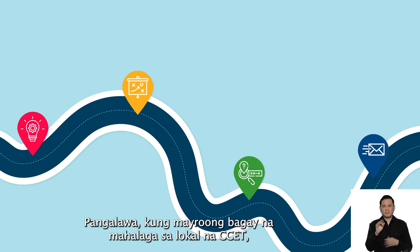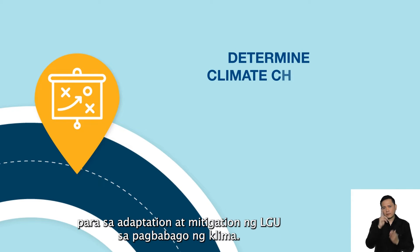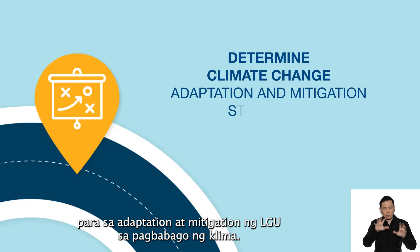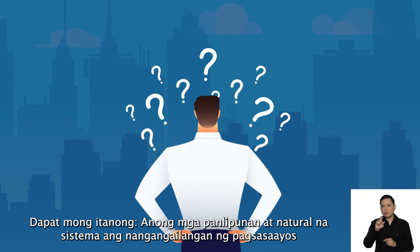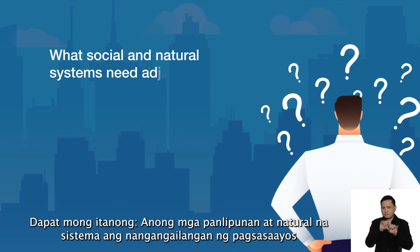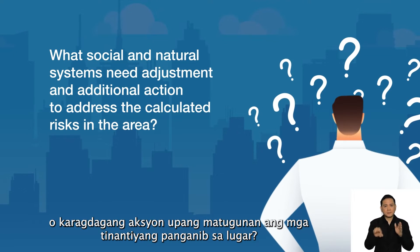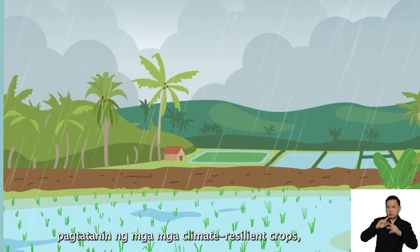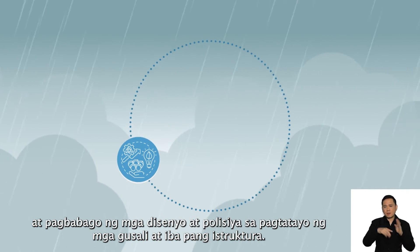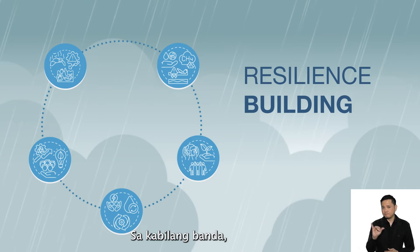Second, determining the strategies for climate change adaptation and mitigation is key in the local CCE-T. When thinking about adaptation, you must ask: What social and natural systems need adjustment and additional action to address the calculated risks to the area? For example, installation of early warning systems, building flood defenses, building climate change-resistant crops, and redesigning systems and policies to incorporate resilience building.